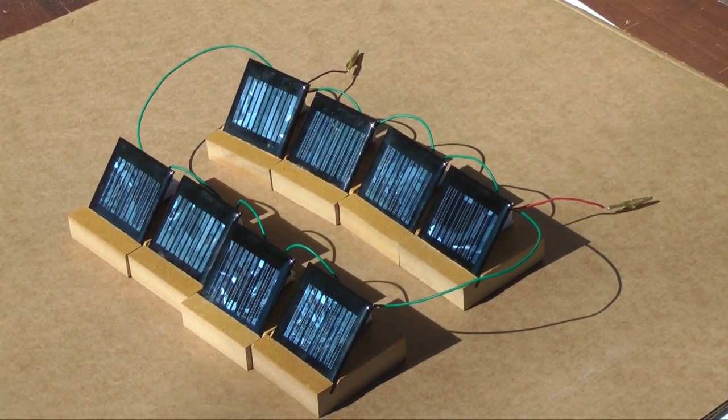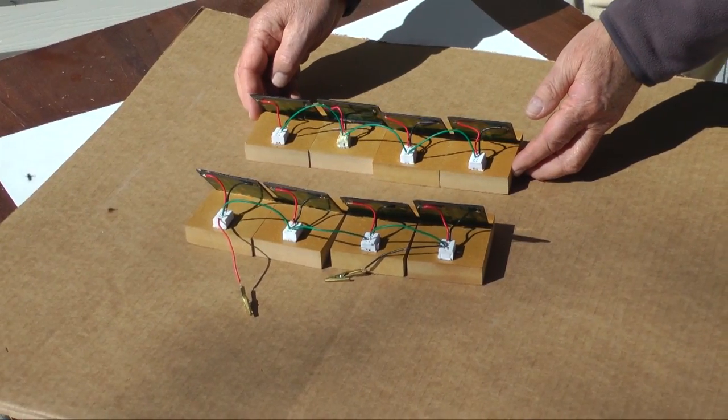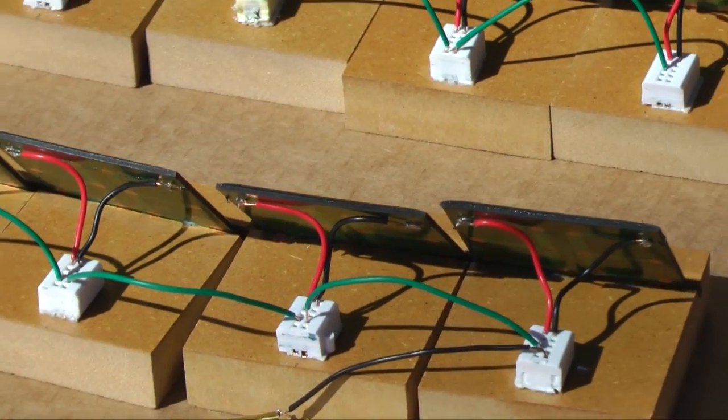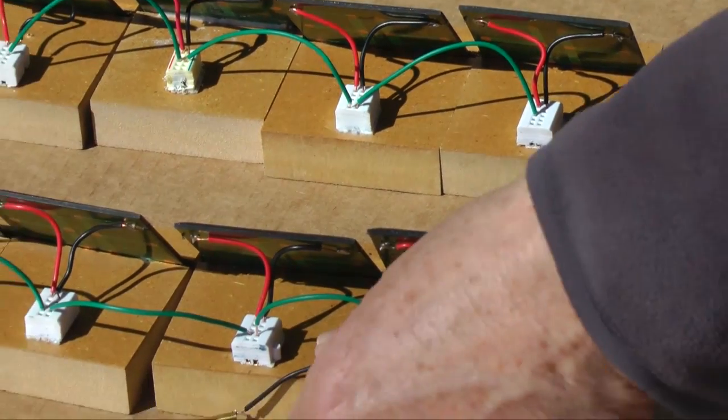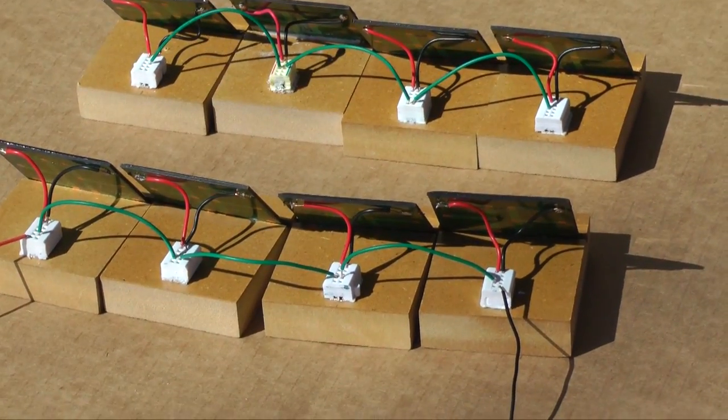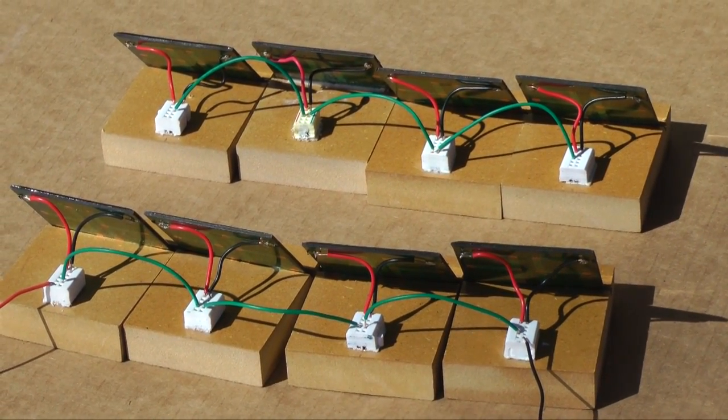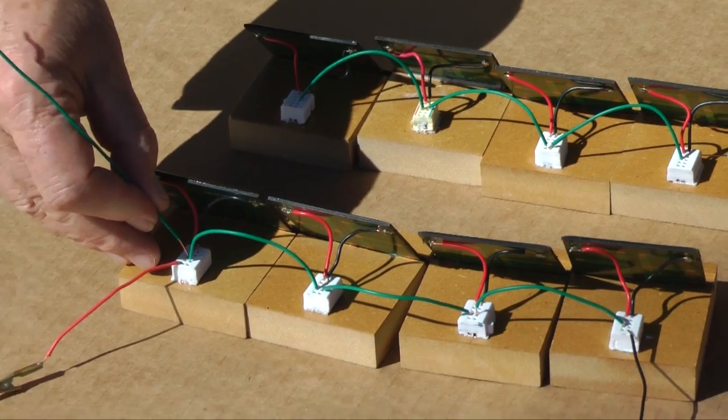I've started with a four panel string. Its voltage is over 20 volts. Current output from this string is over 25 milliamperes. I've placed a second identical four panel string behind the first one and joined these two strings in parallel with positive to positive and negative to negative.